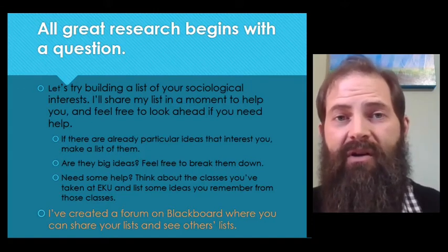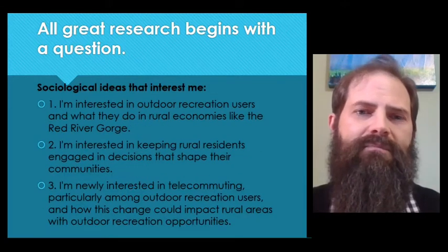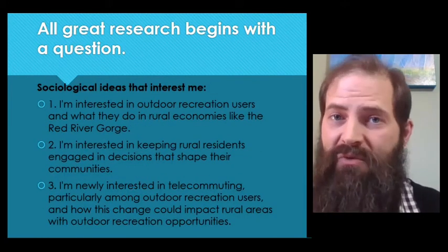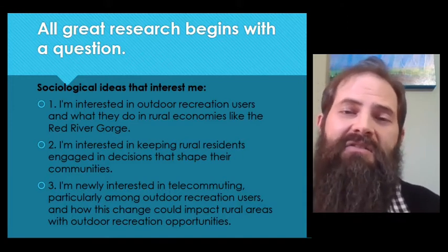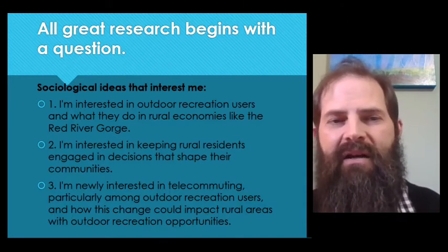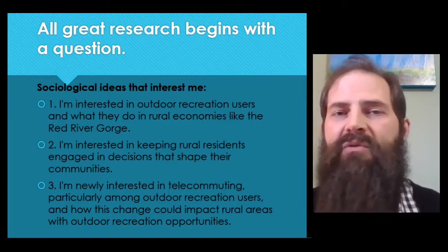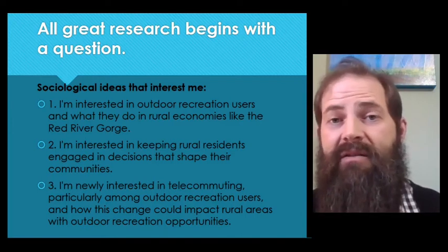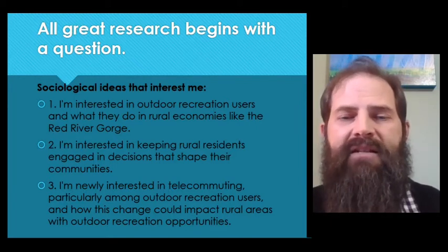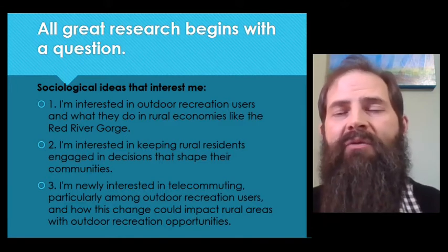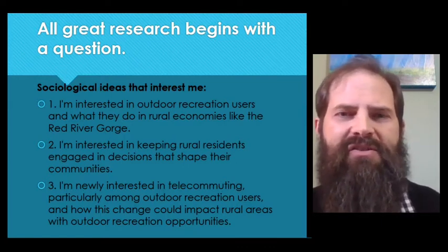I want you to look at my examples first. If I had to frame three things in a sentence that interest me as a sociologist, these are the three I would say. First, I'm interested in outdoor recreation users and what they do in rural economies. I like to talk about Kentucky's Red River Gorge quite a bit — that's an area I've written a book on and conducted several studies. I like to think about what outdoor recreation users are doing for the economies in those areas.